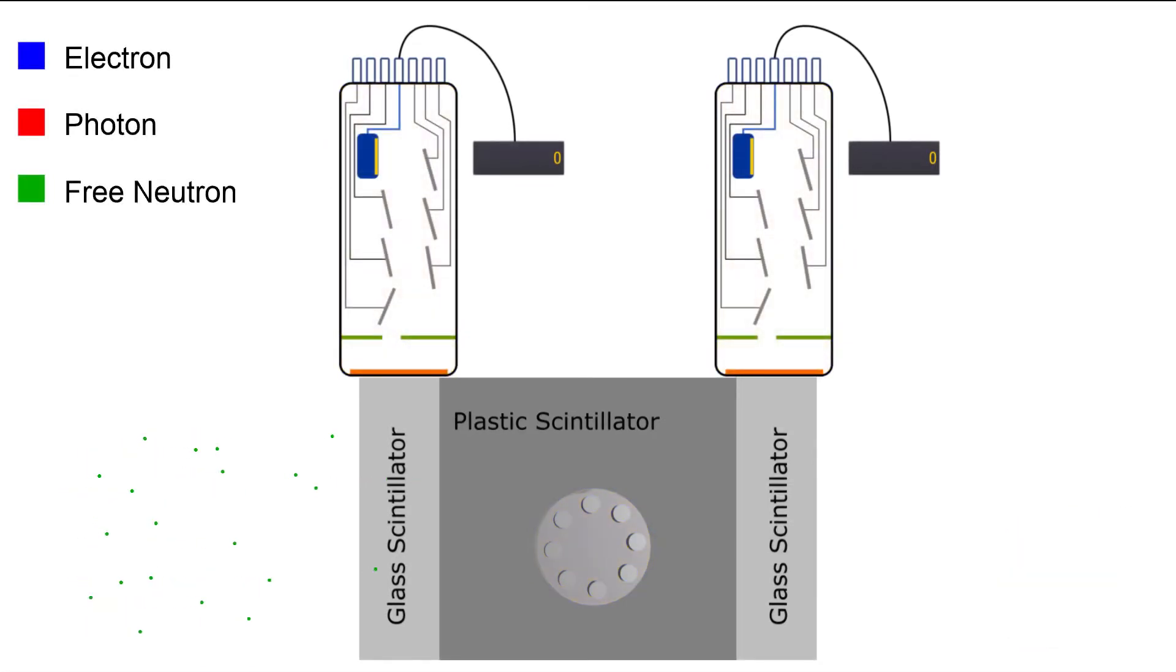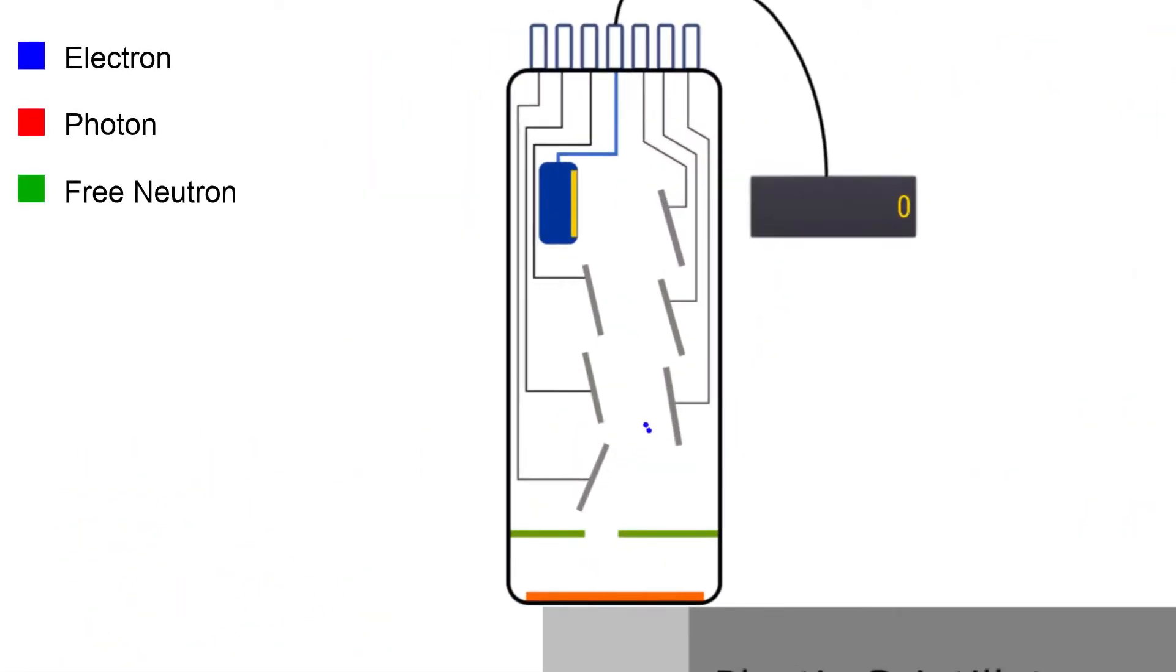The photons created by this interaction are directed to hit the first stage of a photomultiplier tube. This causes electrons to be released. These electrons then hit the next stage of the photomultiplier, which causes more electrons to be released. These go on to hit more stages, releasing even more electrons for every stage.